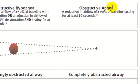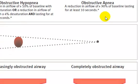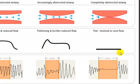Finally, obstructive apnea is a reduction in air flow of 90% or more of baseline, lasting at least 10 seconds. You can see a cessation of air flow in the airway channel, indicated as such.